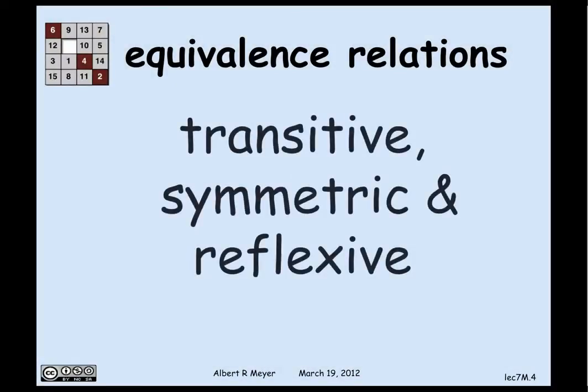An equivalence relation is a symmetric relation that is also transitive and reflexive. The mutual walk relation — the strongly connected relation in a digraph — is an equivalence relation, because if there are two-way paths between u and v and between v and w, then there's one between u and w by going from u to v to w and back. Likewise, there is a length zero walk from any element to itself, and by definition strong connectedness is symmetric.